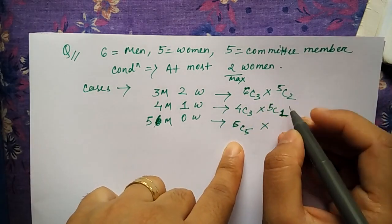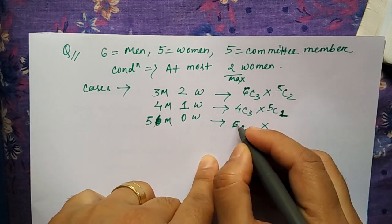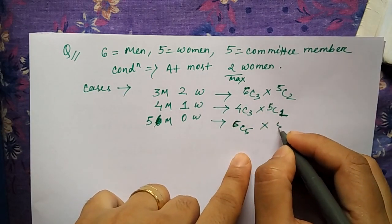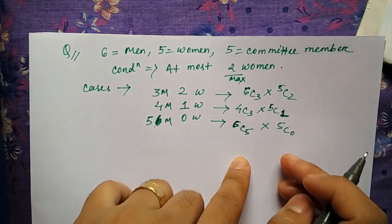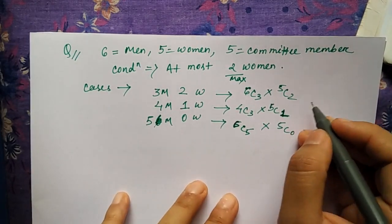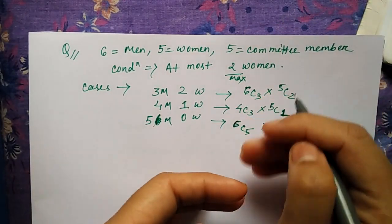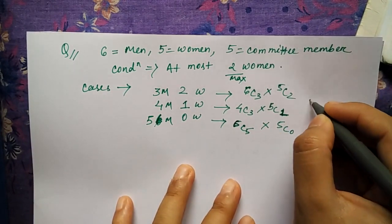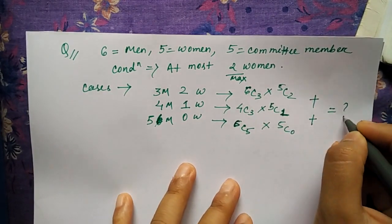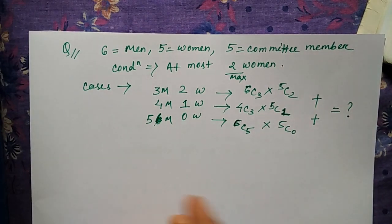You can write the values. In the same way, the events are independent of each other, so the values will be added and you can get the answer. This is up to you.